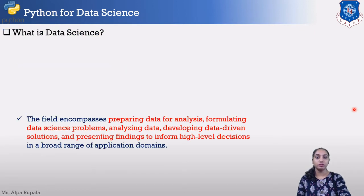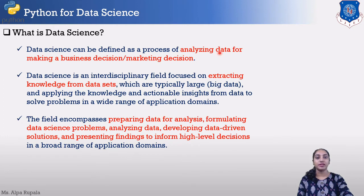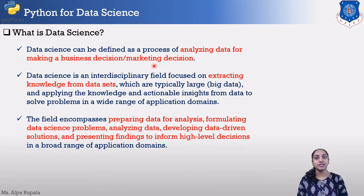First of all, what is the definition of data science? Data science can be defined as a process of analyzing the data for making a business decision or marketing decision. Ultimately, data science is a field in science which is basically working with data.